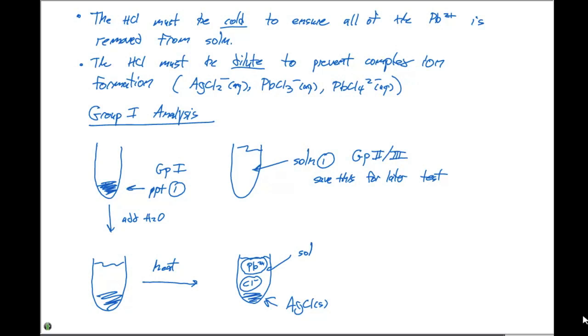So I'm gonna refer to this solution as solution number two. And the silver chloride we'll call precipitate two. We're also gonna separate each of these. So we're gonna decant the solution, which will effectively separate the lead and the silver.